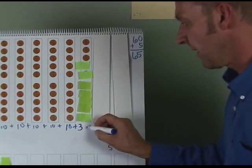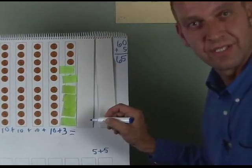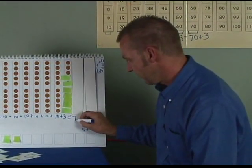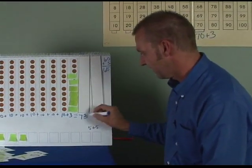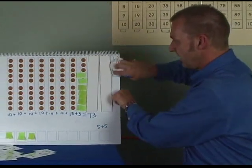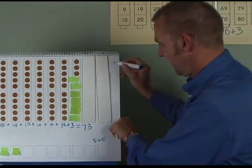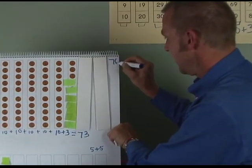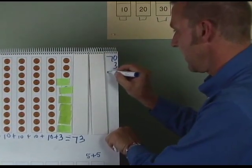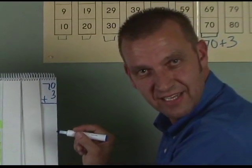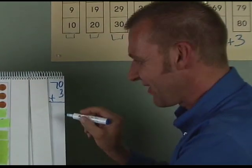70 plus 3 equals 73. We write that right here. Remember, we can also write the equation vertical. 70 plus 3 equals, what is it, class? 73. Very good.